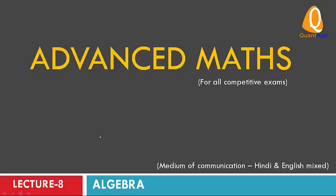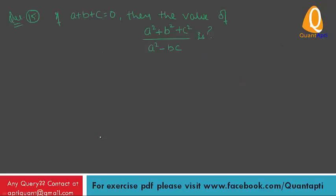Hello friends, 8th lecture of algebra series. If a plus b plus c is equal to 0, then find the value of a square plus b square plus c square upon a square minus bc.